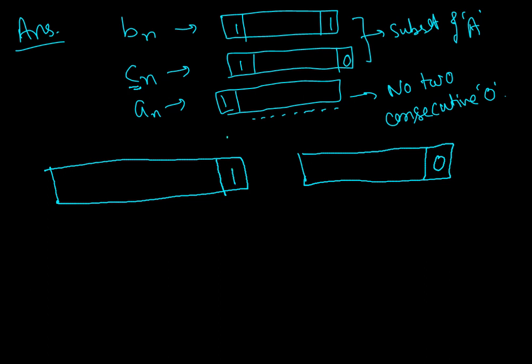This is the nth digit. Now I am supposed to keep track of the condition that you should not have two consecutive zeros.